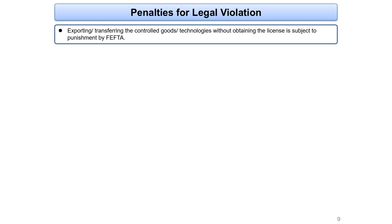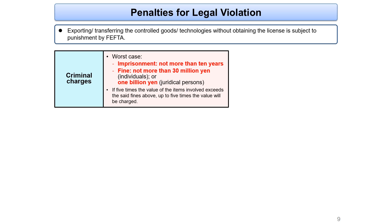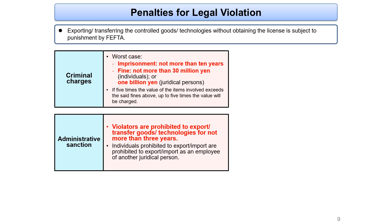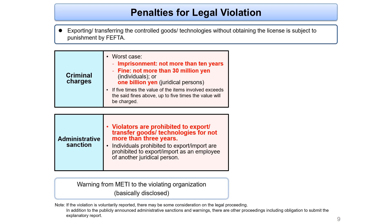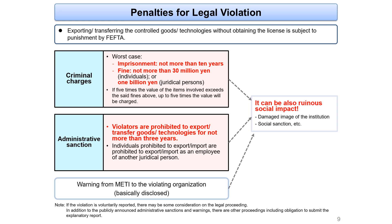Exporting or transferring controlled goods or technologies without obtaining the required license is subject to punishment under the Act. Criminal charges can include imprisonment of up to 10 years or a fine of 30 million yen against individuals, or 1 billion yen against juridical persons, with fines chargeable against both. Administrative sanctions can include prohibiting export of goods or transfer of technologies for up to 3 years. Even without criminal or administrative charges, a warning from METI may be published on the METI website, and violations can cause severe reputational damage to the organization.